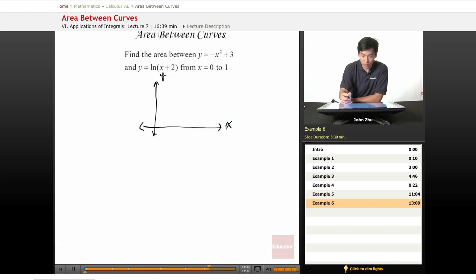So let's go ahead and draw from x equals zero to x equals one, so here's one side of the bound and here's another.